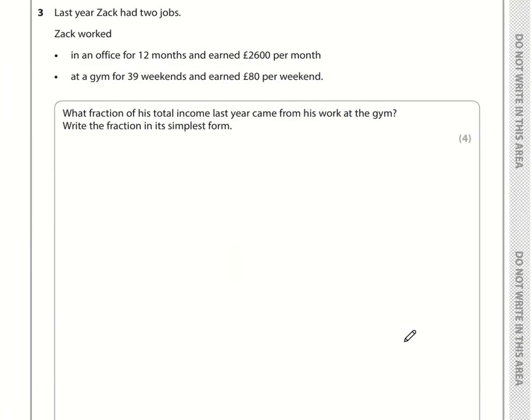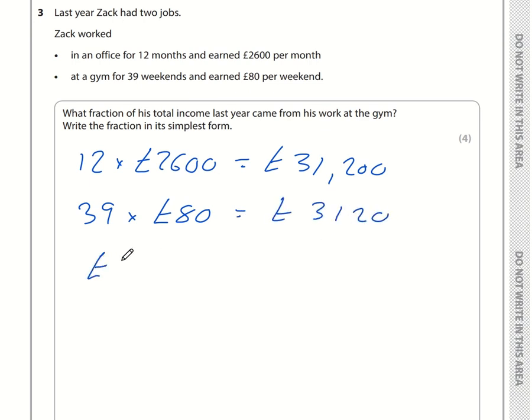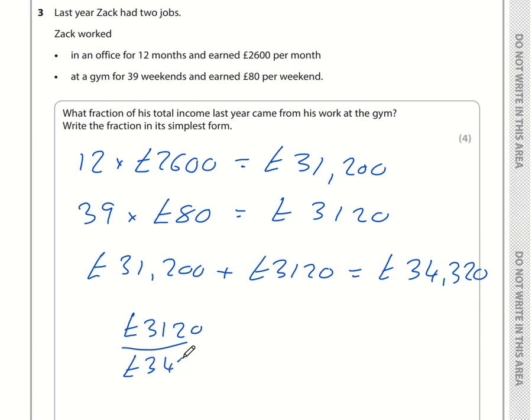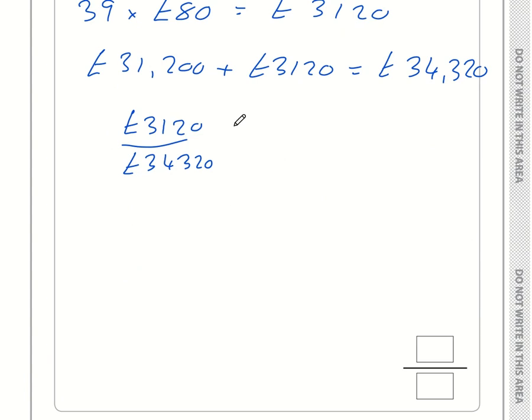Question number 3. Last year, Zach had two jobs. He worked in an office for 12 months and earned £2,600 per month. His total would have been 12 times 2,600, which is £31,200. At the gym, 39 weekends for £80 per weekend. That's 39 times 80, which is £3,120. In total, he earned £34,320.